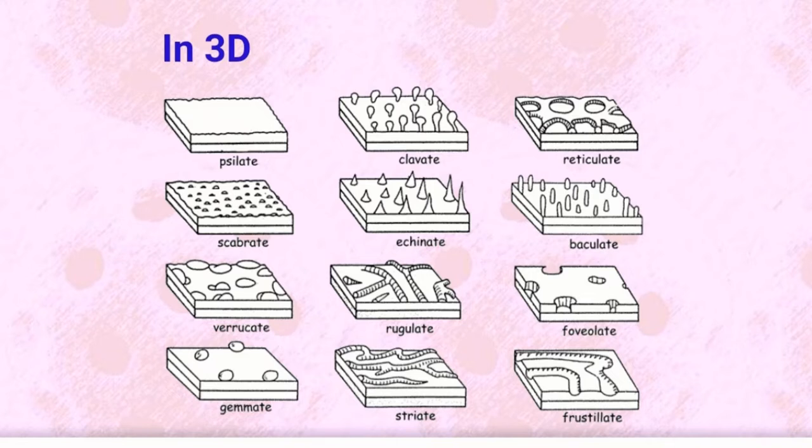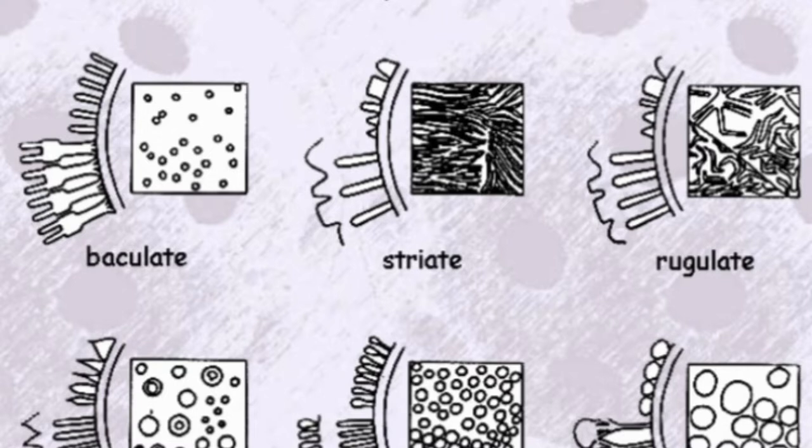For identification in pollen grains, most endexine layers are uniform in structure and are undifferentiated. The exine or sexine usually is not uniform structurally. Differentiation often develops in the form of irregularities on the exterior which are known as sculpture patterns.